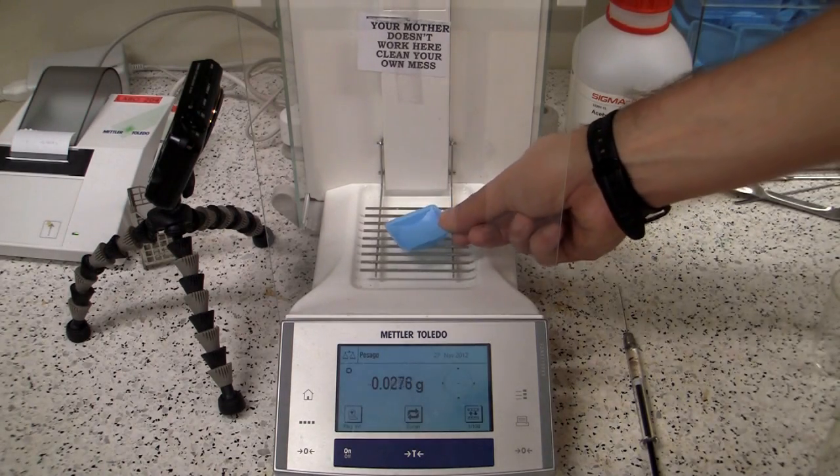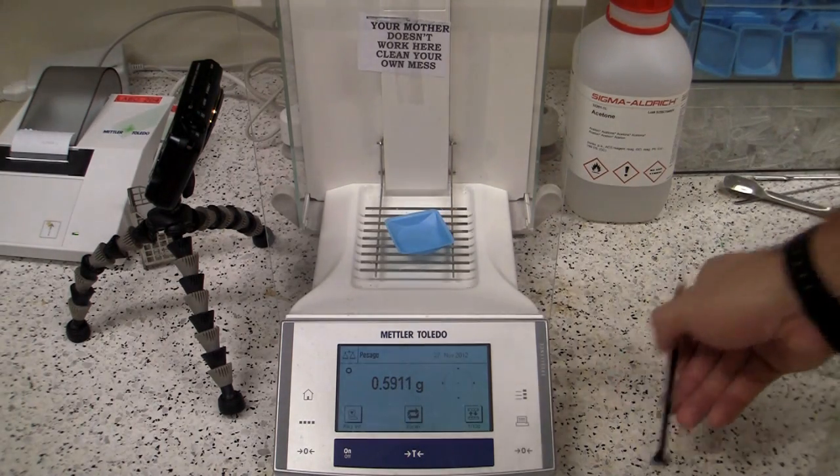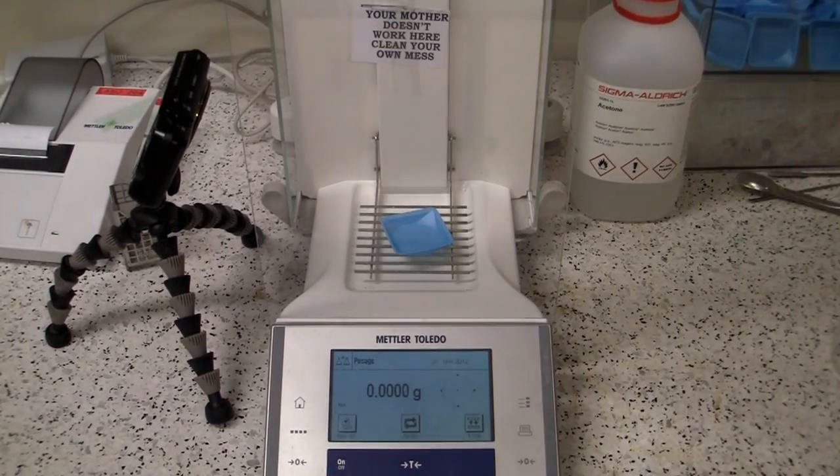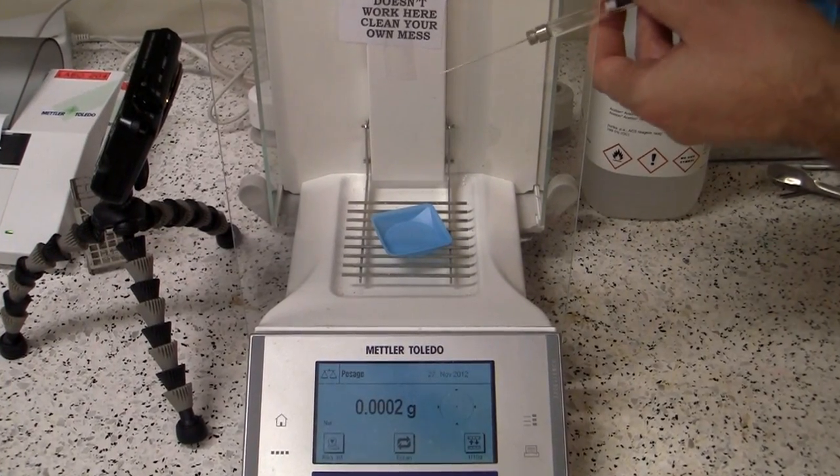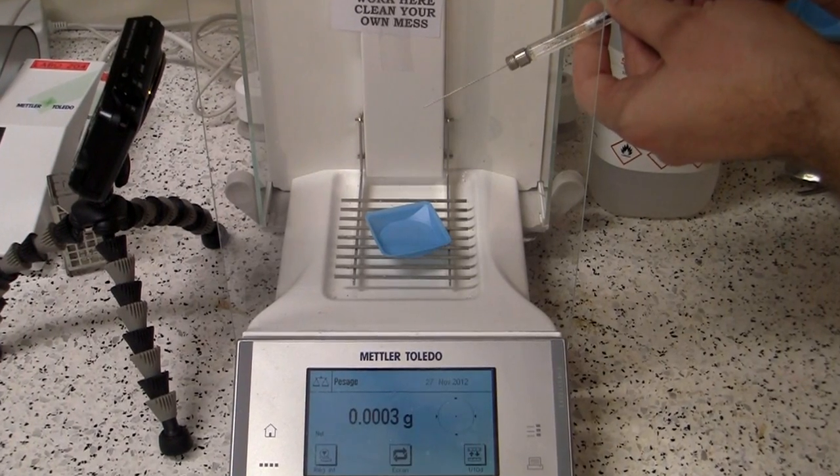And to put this even more into perspective, I'm going to weigh a single drop of water. Now, a drop of water typically weighs about 10 milligrams. So that's one hundredth of a gram. So let's see what we can do.